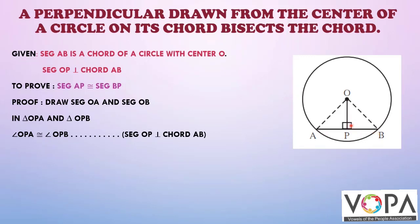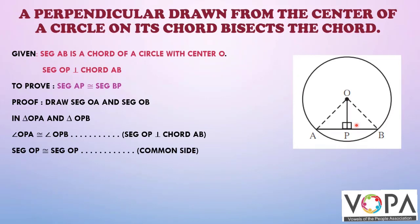Since OP is perpendicular, both angles OPA and OPB will be 90 degrees. Segment OP is congruent to segment OP, because it is a common side for both the triangles.